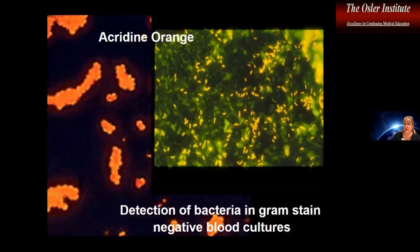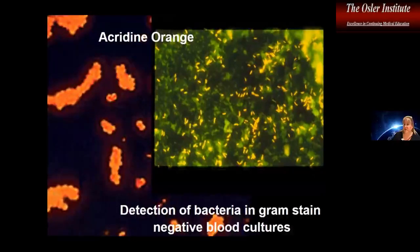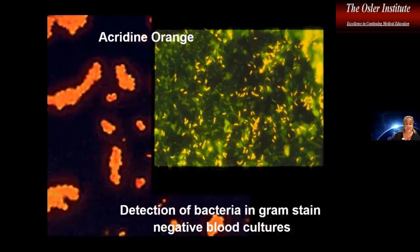Some laboratories also use acridine orange, which can tell you morphology — cocci versus rods. Most people use this for detecting organisms when they have gram-stain-negative blood cultures. A blood culture comes off positive, you do a gram stain and it's negative — acridine orange intercalates into the nucleic acid and fluoresces, giving you an idea of organism morphology but not gram reaction. It is helpful for picking up gram-stain-negative blood cultures that are in fact positive.